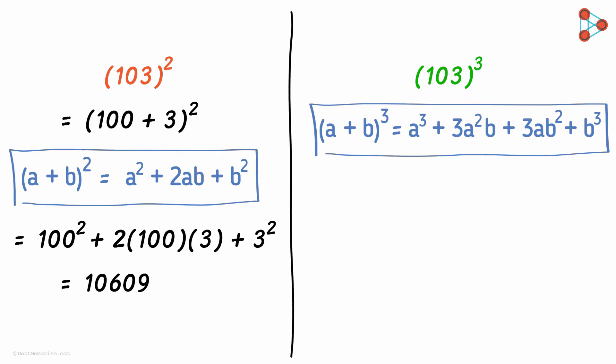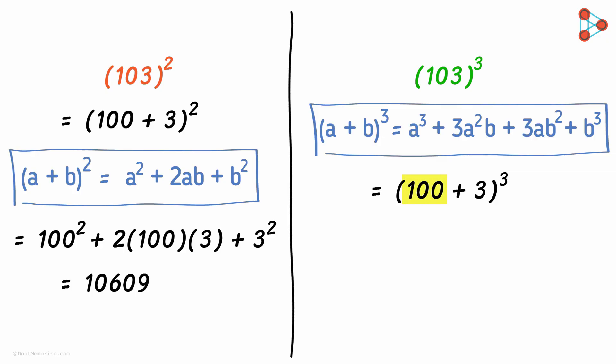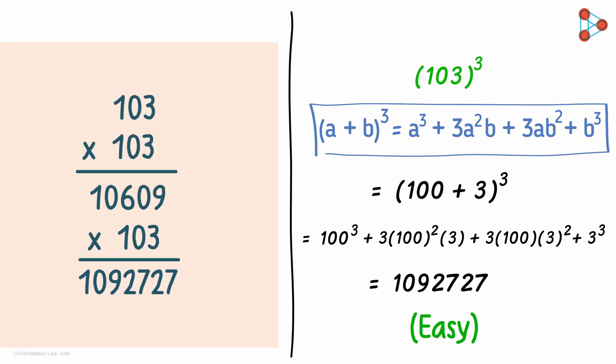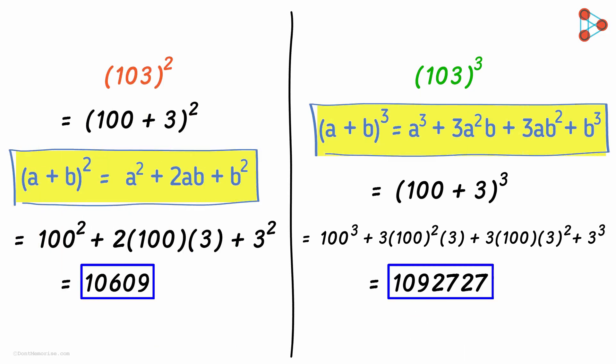So we can write one hundred and three as one hundred plus three. Substituting one hundred in place of a and three in place of b, we get the following answer. Again, easier than multiplying it the regular way.